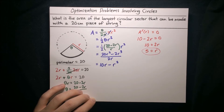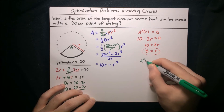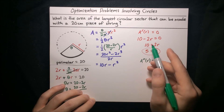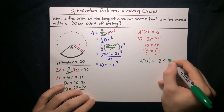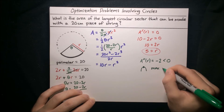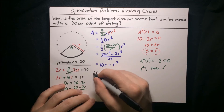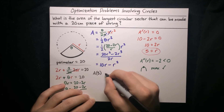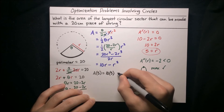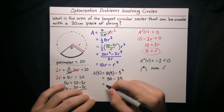We're not done yet — to confirm this is indeed a maximum, let's apply the second derivative test. A double prime of r equals negative 2, which is less than zero, meaning the stationary point lies on a downward parabolic portion of the graph — so it is indeed a maximum. Evaluating at r equals 5: A equals 10 times 5 minus 5 squared, which is 50 minus 25, which is 25 centimeters squared.